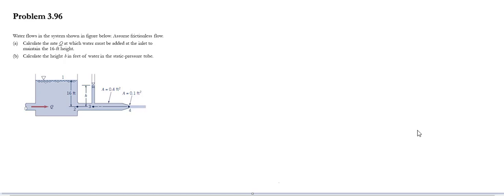Problem 3.96. In this problem, water flows in a system shown in the figure below. We need to assume a frictionless flow. And with this, we're going to calculate the volume flow rate at which water must enter into the inlet to maintain a 16 feet height at point 1. And we also need to calculate the value of h in feet of water for the static pressure of the tube at point 3.